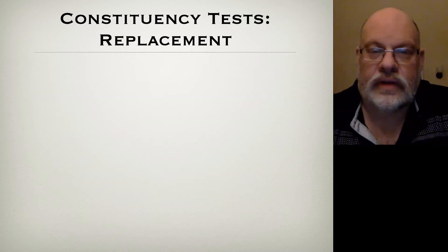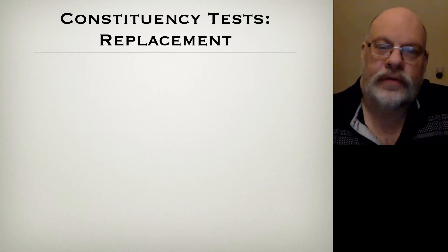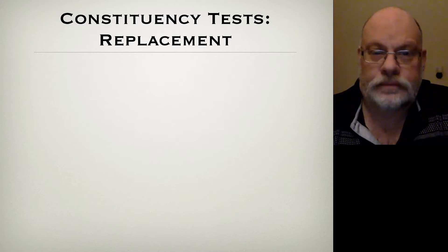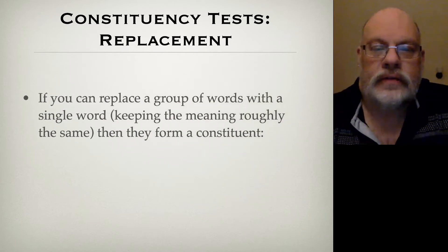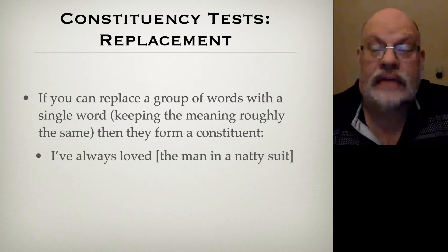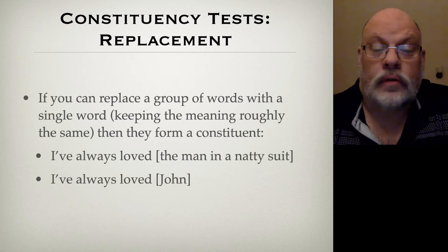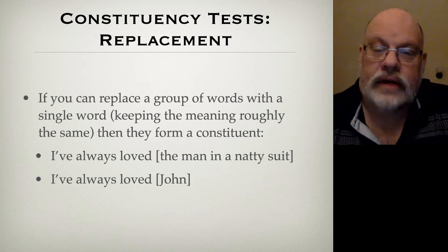Another standard constituency test makes reference to the idea that if a syntactic process identifies a group of words, those groups must be constituents. So another process is replacement: if you can replace a group of words with a single word, roughly keeping the meaning the same, then they're likely to be a constituent. For example, I've always loved the man in a natty suit — we can replace it with a single word like a name: I will always love John. That tells us that the man in the natty suit is a constituent because it can be replaced by a single word.